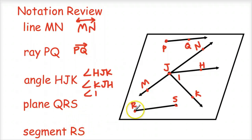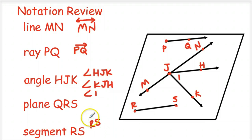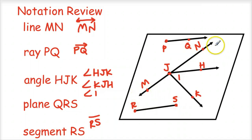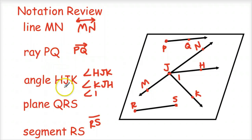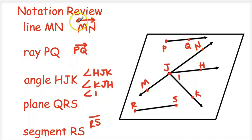Lastly, segment RS — I drew that in because I needed points R and S on the plane. Another notation for that is RS with a line above it, but there are no arrows on each end because it's a segment. A line segment has two endpoints, so it doesn't continue on forever like a line would with all the arrows. That's a little bit of notation review.